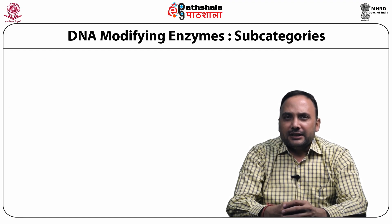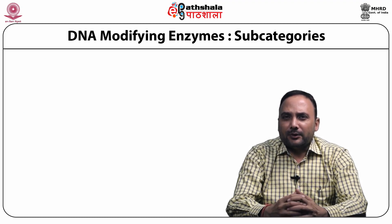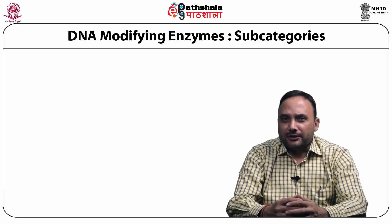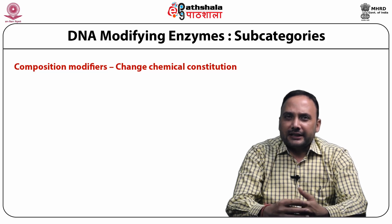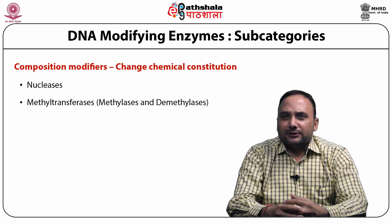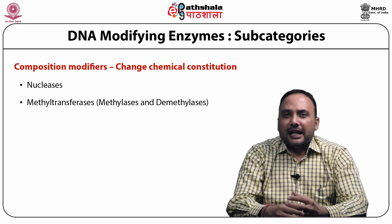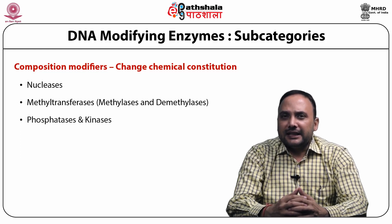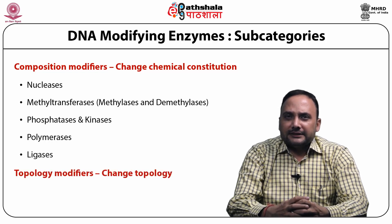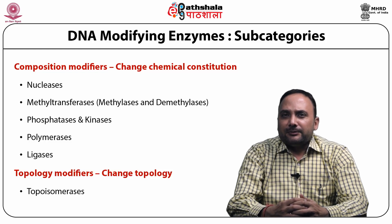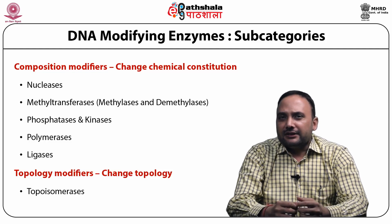DNA Modifying Enzymes are categorized into different categories. Broadly speaking, they can be categorized into Composition Modifiers that essentially modify the composition, and Topology Modifiers that can change the topology of the DNA molecule. The Composition Modifiers category includes enzymes subdivided based upon their activities such as Nucleases, Methyltransferases (including Methylases and Demethylases), Phosphatases and Kinases, DNA Polymerases, and DNA Ligases. The DNA Topology Modifiers category includes enzymes referred to as Topoisomerases, further subdivided into Type 1 and Type 2 based upon their mechanism of action.